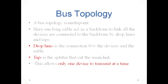Bus topology is a multipoint topology. One long cable acts as a backbone to link all the devices, which are connected to the backbone by drop lines and taps. A drop line is a connection between the device and the cable. A tap is a splitter that cuts into the main link.